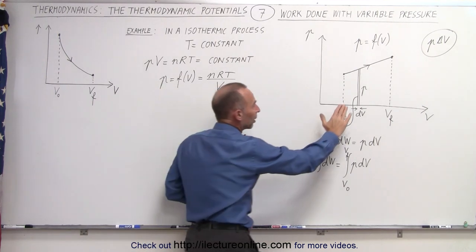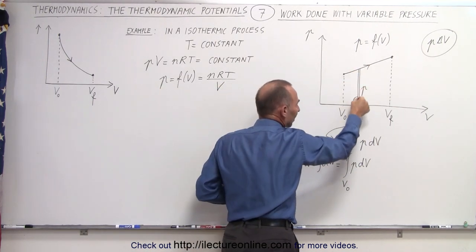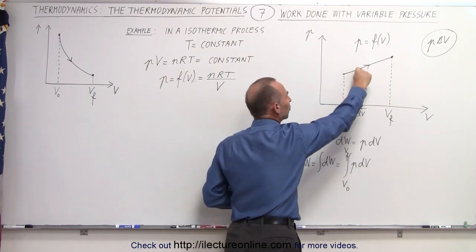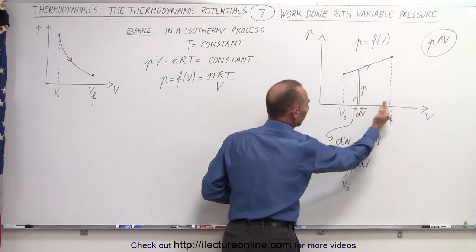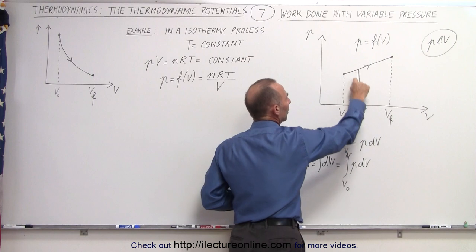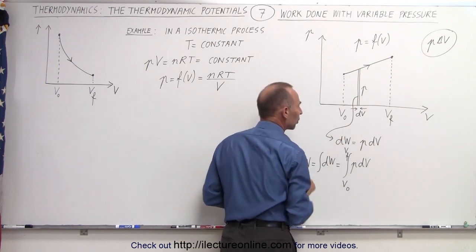It is indeed the area underneath the curve, but we can do that by taking a very small slice of work, call that a small dw, that is equal to the pressure at that point at the volume as the volume is changing, times the change in the volume. So the work is represented by the area that little slice, that would be a small amount of work.